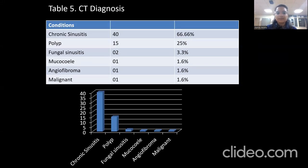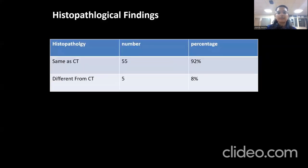On CT diagnosis, the most common condition diagnosed on PNS CT is chronic sinusitis, seen in 40 cases — that is 66% — followed by polyp in 15 cases, fungal sinusitis in 2, mucocele in 1 case, angiofibroma in 1, and malignant condition in 1 case. Histopathological findings were the same as CT in 55 cases — that is 92% of cases — while 5 cases had different findings from CT.